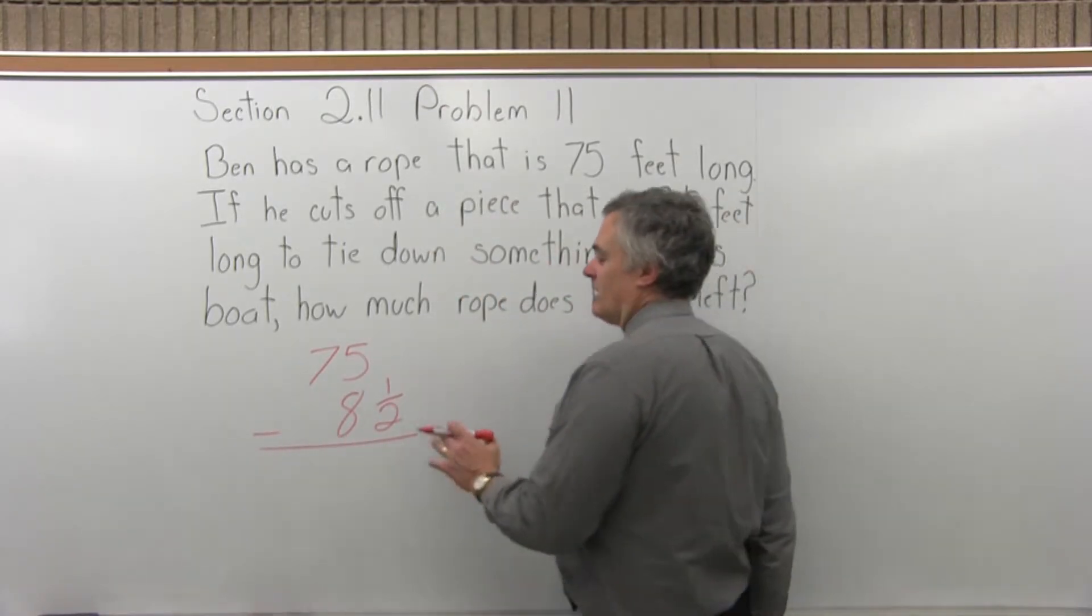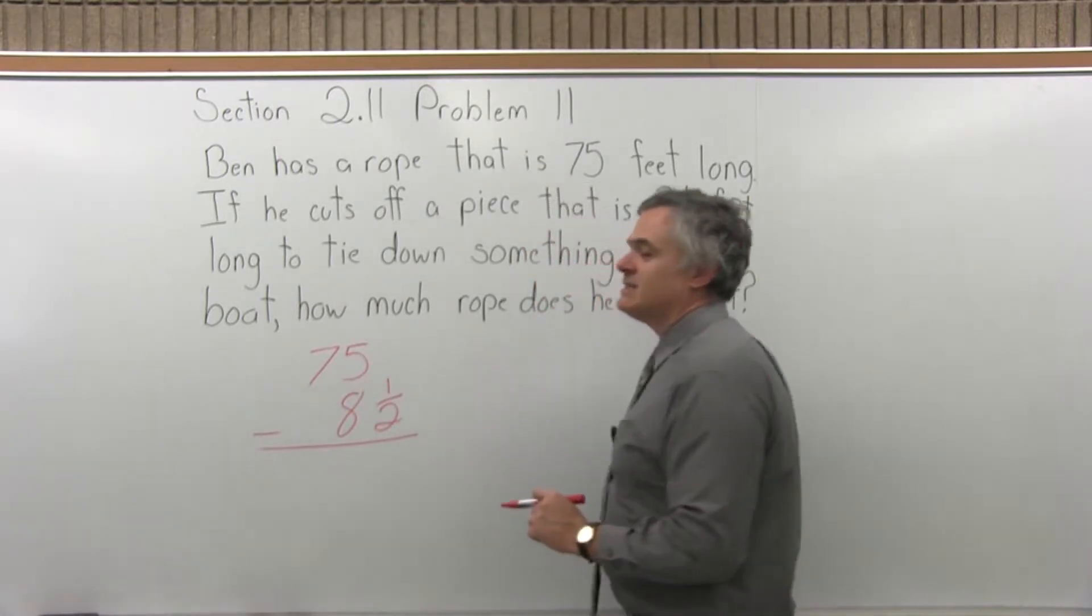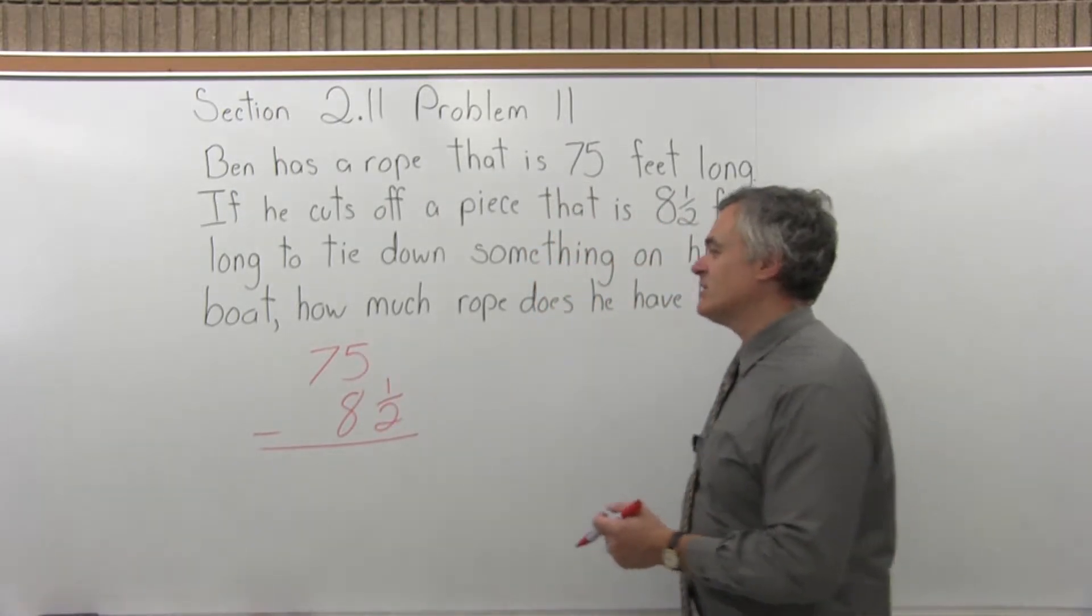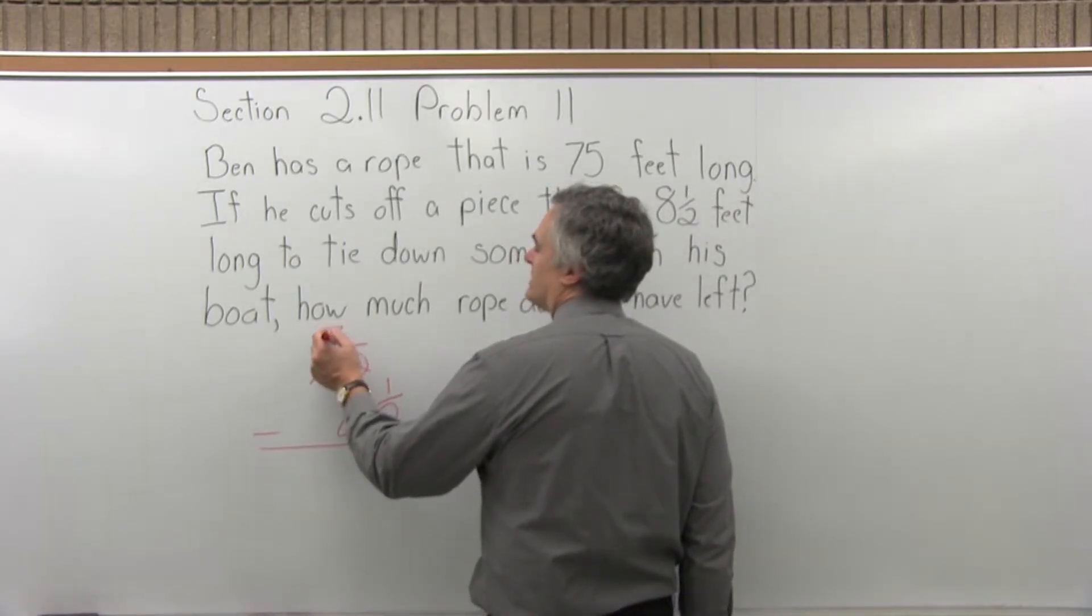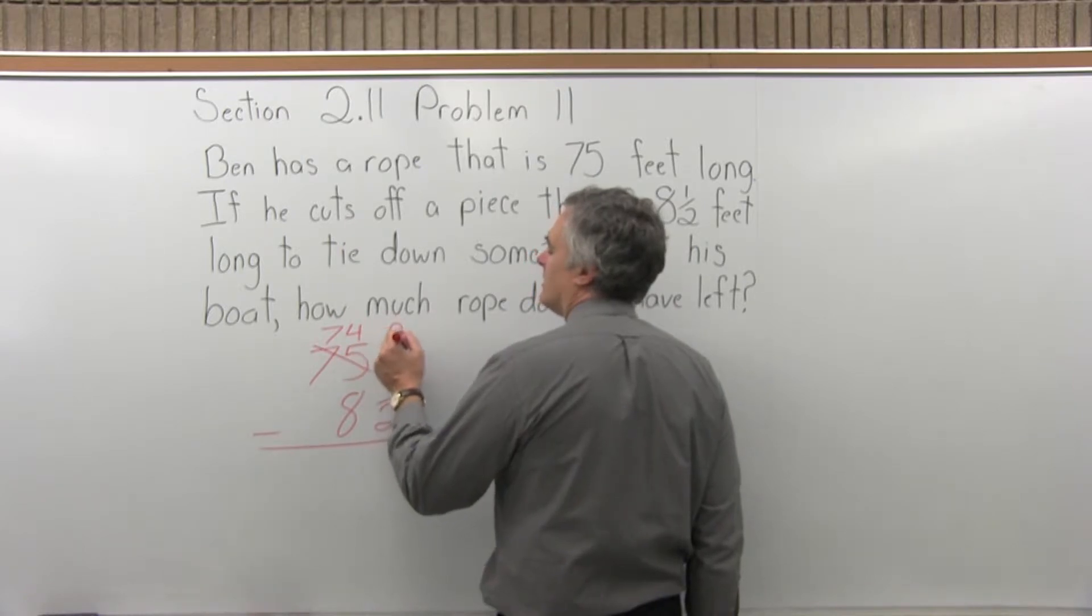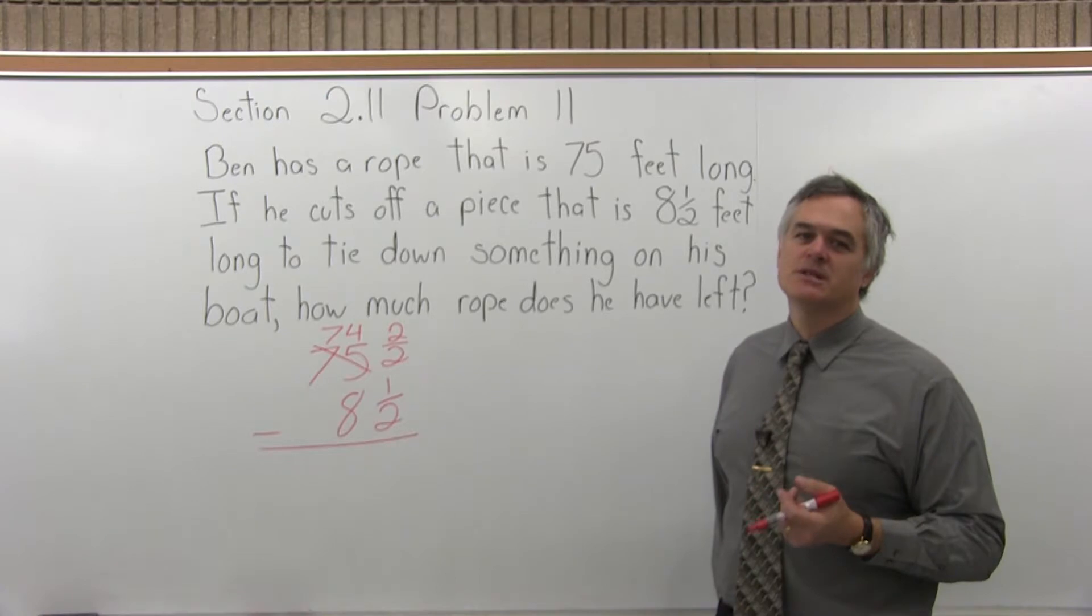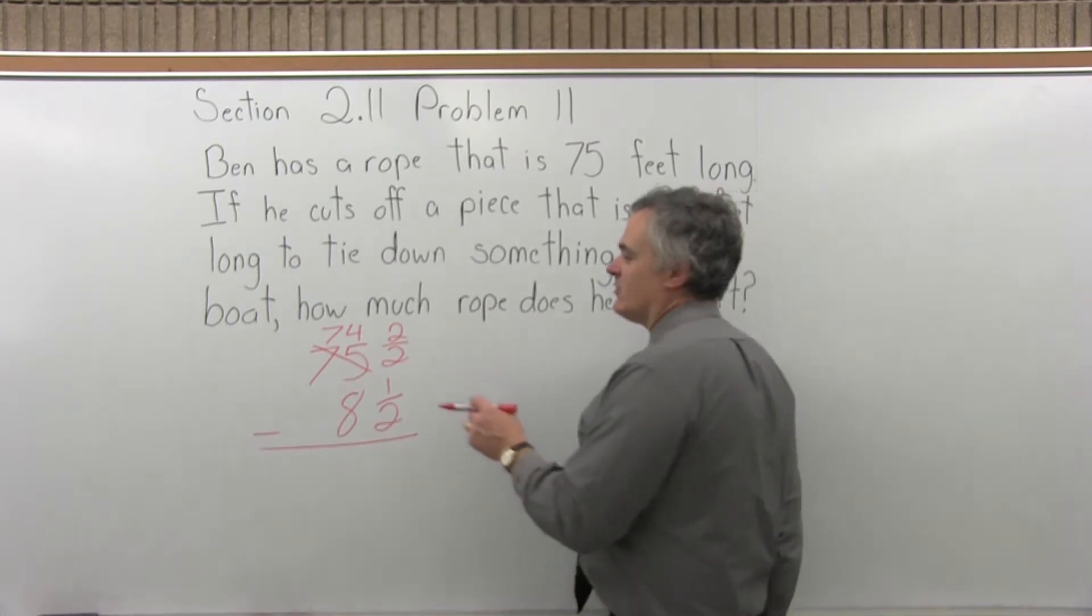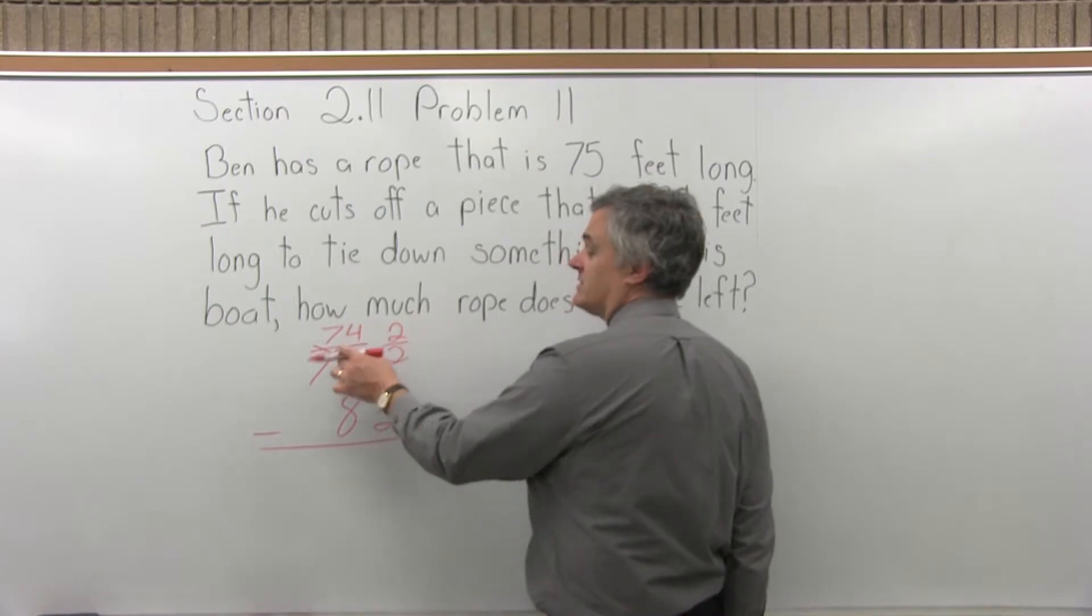Now what makes this a little bit tougher, if it was just 8, we could subtract it more easily. The 8 has a fraction with it. There's no fraction on the top. So what I'm going to do is take one away from the 75, make it a 74, and write next to it 2 over 2. So I basically borrowed one from the 74. So I still have a 75. There's 74, and the 2 over 2 is 1, so it's still 75.